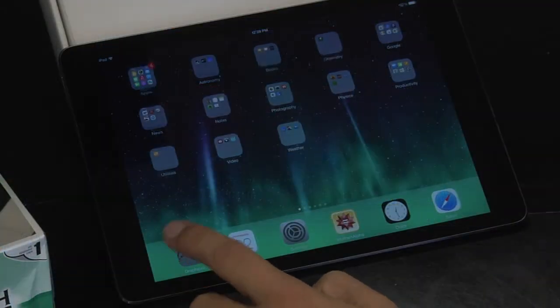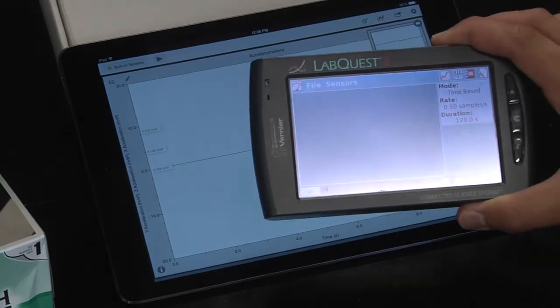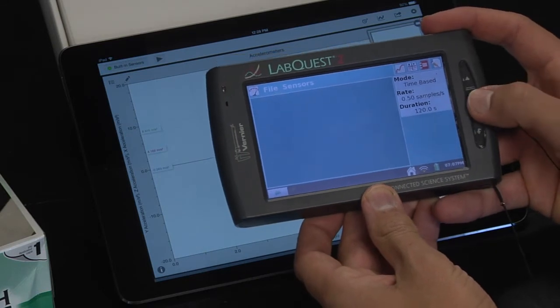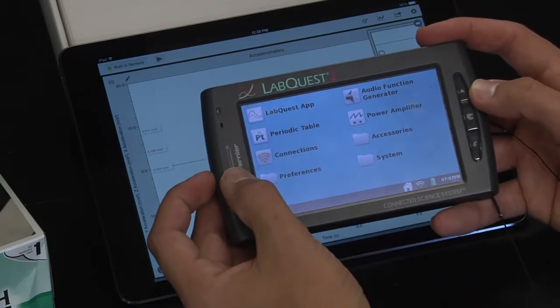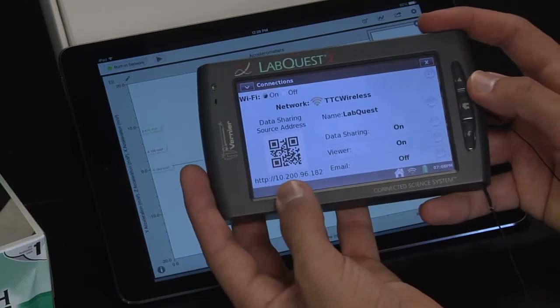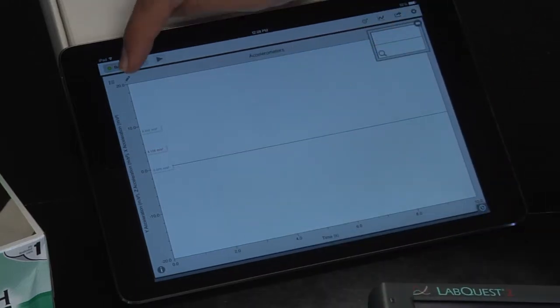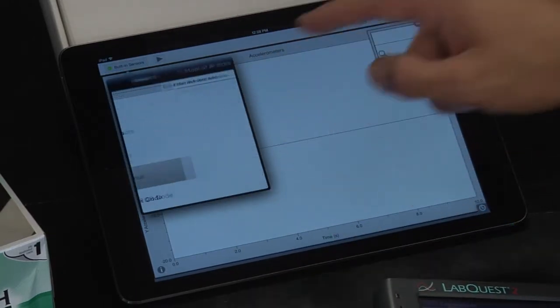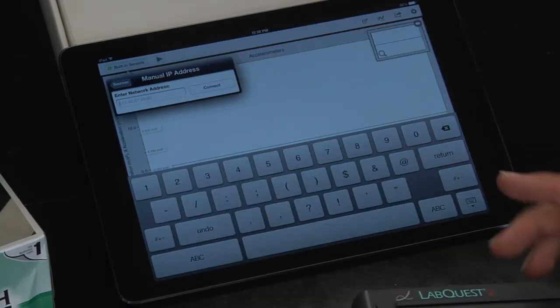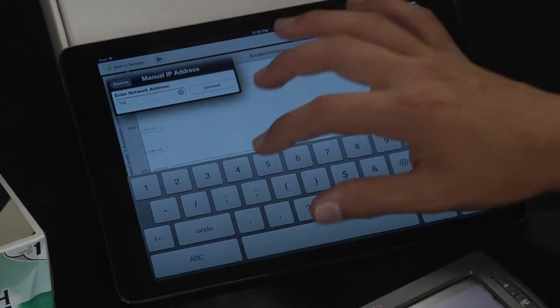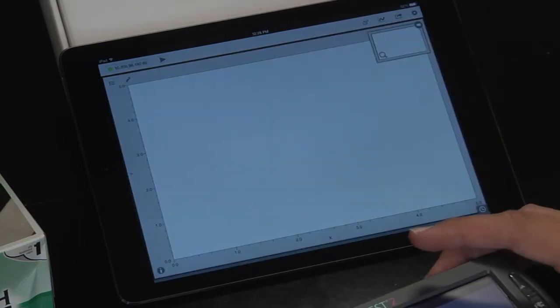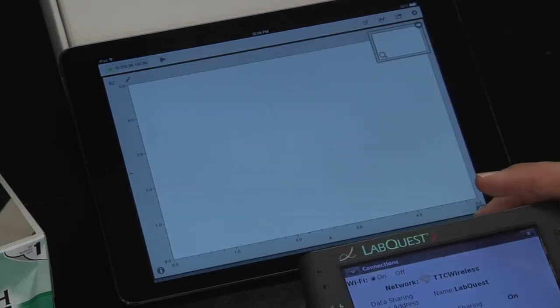So remember we're going to have to interface the iPad with the lab quest. In order to do that we have to find out what the lab quest's IP address is. Go ahead and click the home button and on some of these newer lab quests you can click connections and your IP address will be listed down here on the bottom. Go ahead into the iPad, click built-in sensors and go down to specify source. Now you can enter the IP address of your lab quest. So the devices have now been linked.